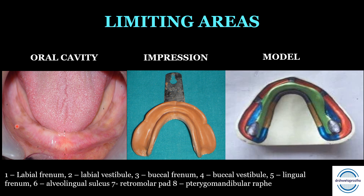Moving posteriorly, the buccal vestibule is recorded as buccal flange on both sides, and here is the buccal vestibule on the model. Coming to the lingual side, the lingual frenum is recorded as a lingual notch in the impression, and here is the lingual frenum on the model. Then comes the alveolingual sulcus on both sides of the lingual frenum, recorded as lingual flange in the impression.